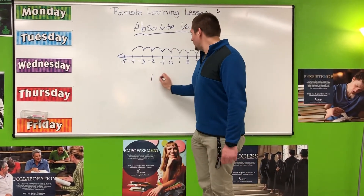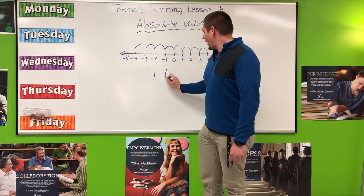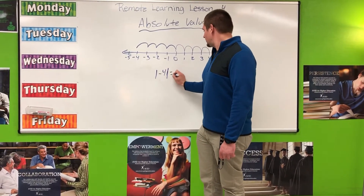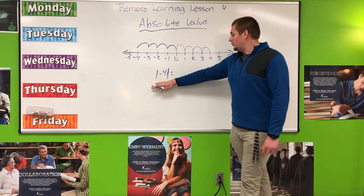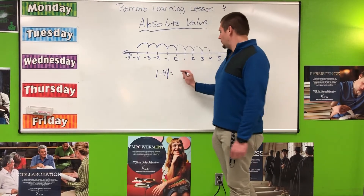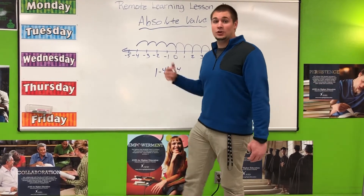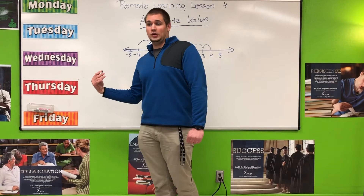Alright, absolute value is represented by brackets that look like this. And the absolute value of negative four would be four. It is positive — we are turning them into a positive situation.